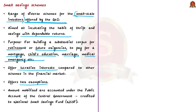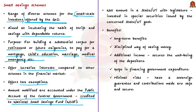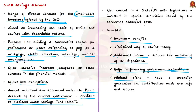The amount mobilized through these schemes is accounted under the public account of the central government, as collections are credited to the National Small Savings Fund in the public account of India — an important point often tested in UPSC prelims. Benefits include long-term disciplined savings, additional income, well-being of depositors, and financing government expenditure. The risk is minimal since they carry sovereign guarantee, making contributions safe and secure.